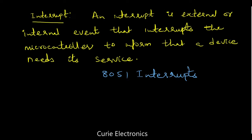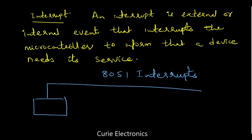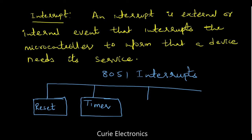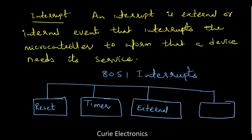8051 has got one reset interrupt. Actually, it's not a user interrupt — it is like a power-on to make sure the controller is ready to execute the program. Then there are two timer interrupts: Timer 0 overflow interrupt and Timer 1 overflow interrupt. It also has external interrupts and a serial communication interrupt. These are the main interrupts of 8051.